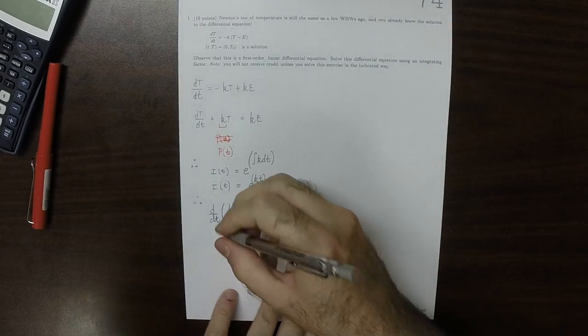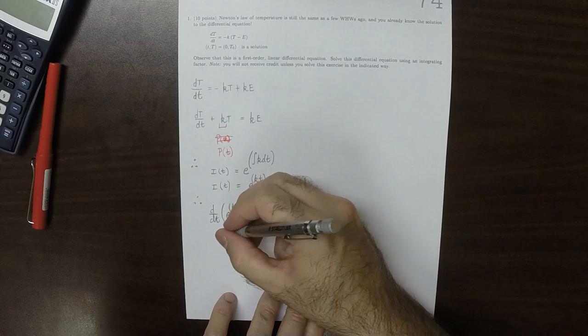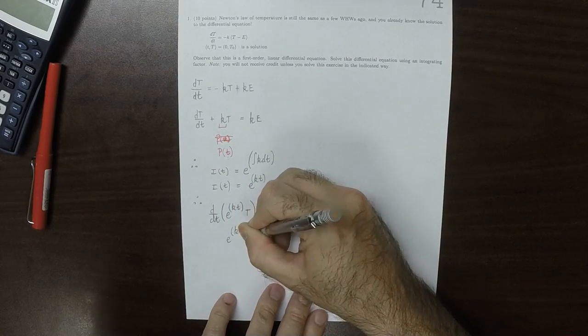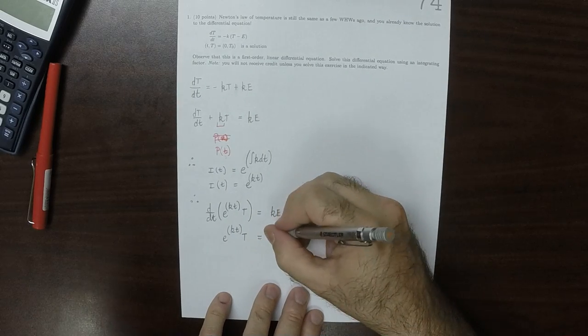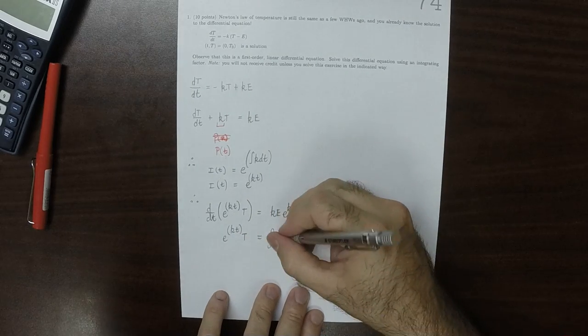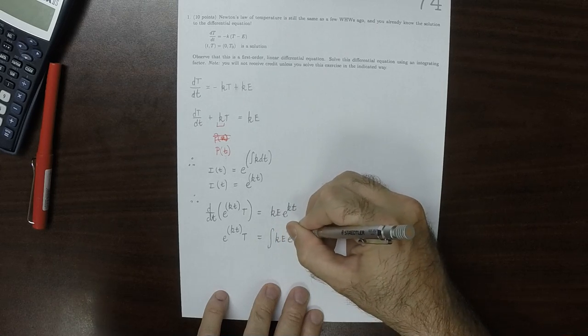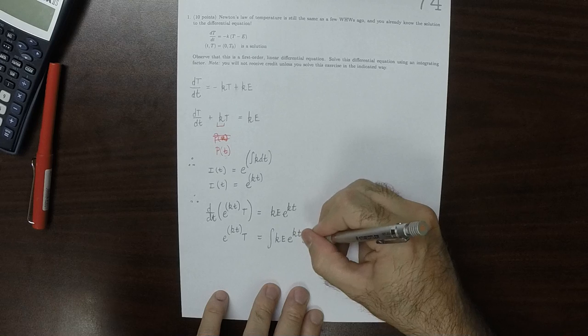So that means that exponential K T times big T is the anti-derivative of K E exponential K T DT.